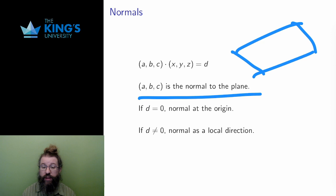If d equals 0, then the plane goes through the origin, and a, b, c dot x, y, z equals 0 explicitly says that all vectors on the plane are just vectors that are perpendicular to the vector a, b, c. Recall that a 0 dot product means the vectors are perpendicular.